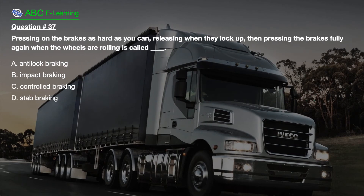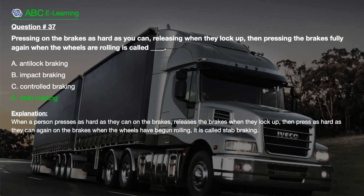Question number 37. Pressing on the brakes as hard as you can, releasing when they lock up, then pressing the brakes fully again when the wheels are rolling, is called: A. Antilock braking. B. Impact braking. C. Controlled braking. D. Stab braking. The correct answer is D. Stab braking.